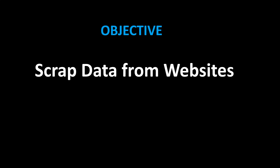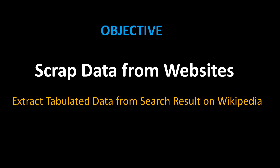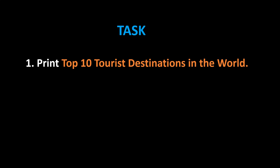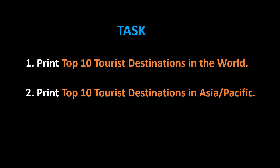You will learn how to scrape data from websites. I will show you with an example how we extract tabulated data from search results on Wikipedia. The task is: number one, print top 10 tourist destinations in the world; number two, print top 10 tourist destinations in Asia Pacific.